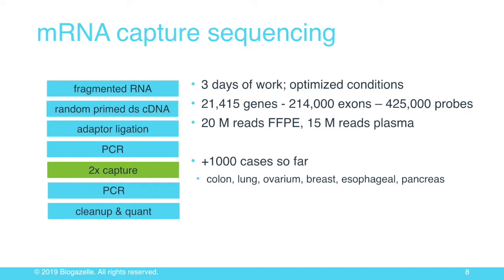It's a laborious workflow, at least in the original implementation. We capture with about 400,000 probes to do the full human transcriptome enrichment, and we typically sequence 50 million reads, which proves sufficient for a liquid biopsy. We've done about 1,000 cases so far, mainly in oncology. The original implementation used a double capture round, which we are now abandoning in favor of a single round capture.